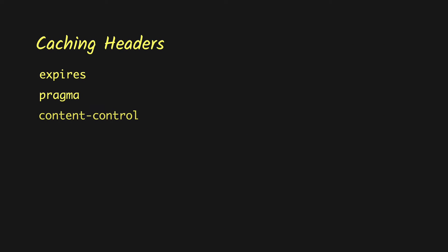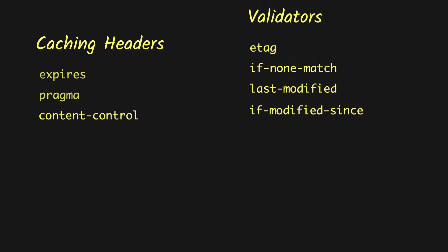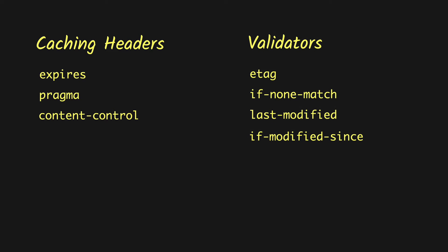We have mainly three caching headers: Expires, Pragma, and Cache-Control. Expires and Pragma were there before HTTP 1.1 and aren't used as much, but you might see them used for backward compatibility. Cache-Control was introduced in HTTP 1.1 and is the preferred way of caching — everything you can do with Expires and Pragma is also possible with Cache-Control. We also have some validator headers used by the client to make sure cached content is still usable.